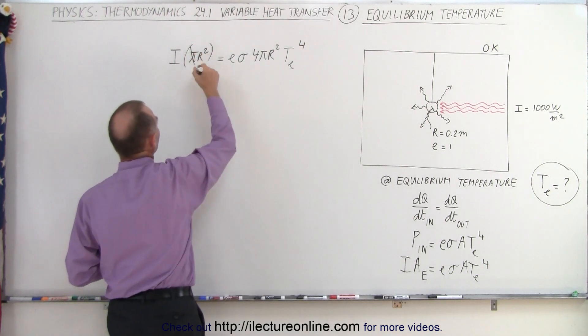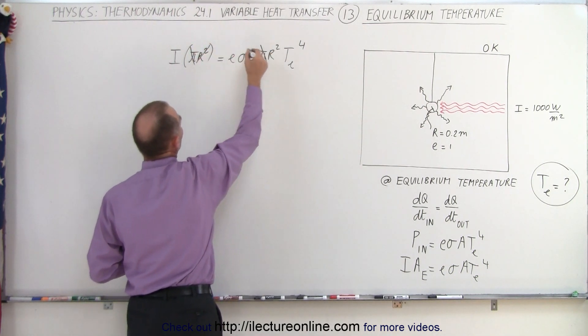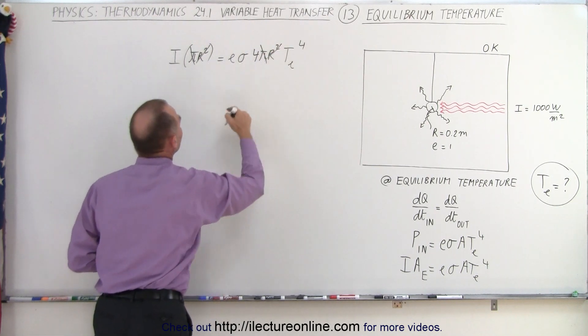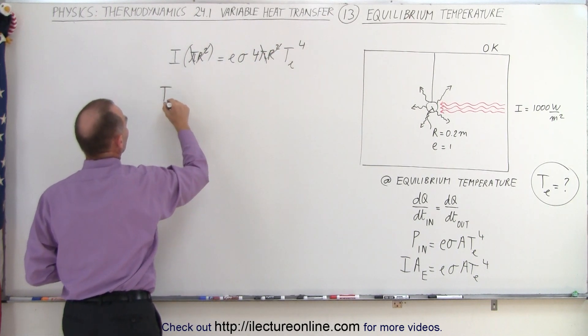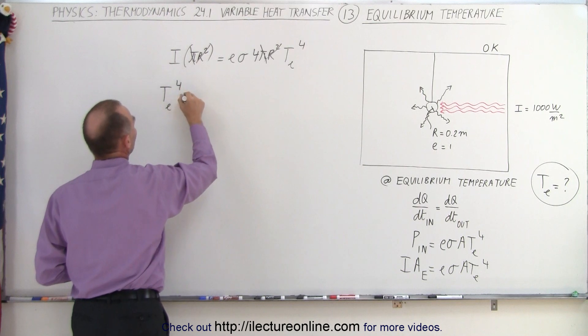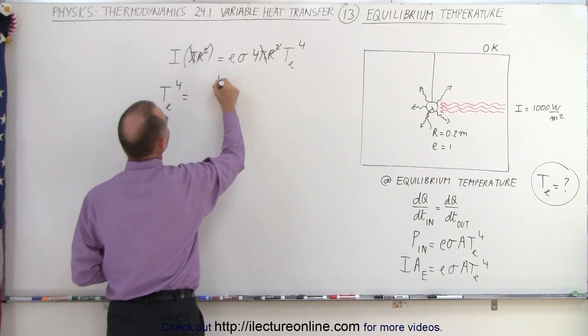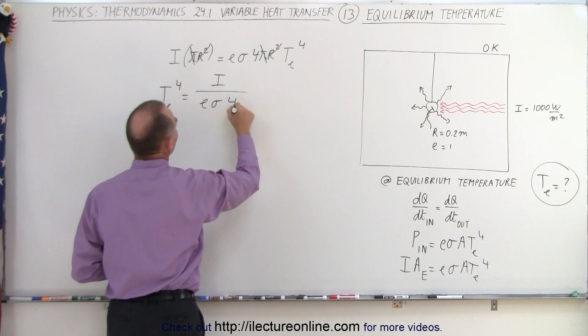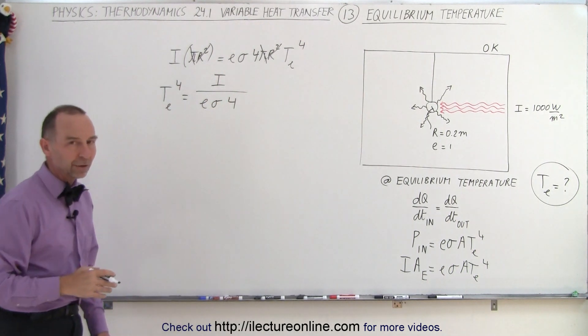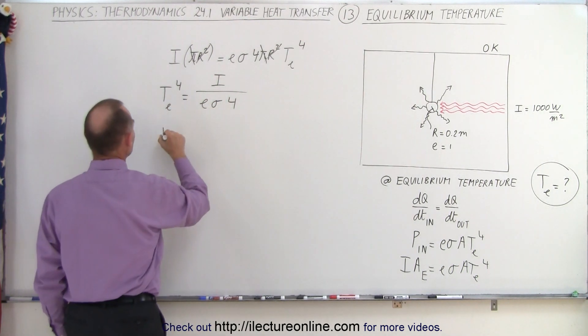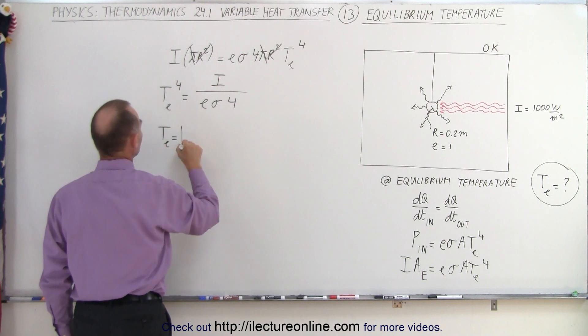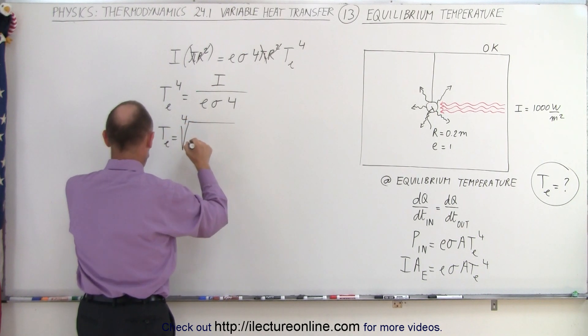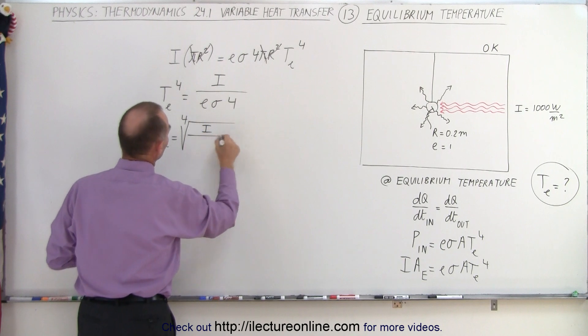The pi's cancel, the R squared's cancel, and we're going to isolate the temperature. So temperature equilibrium to the fourth power is equal to the intensity divided by E sigma times 4. Then we have to take the fourth root of that. So the equilibrium temperature is equal to the fourth root of the intensity divided by E sigma times 4.